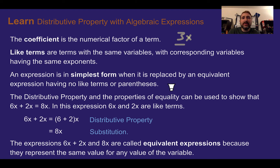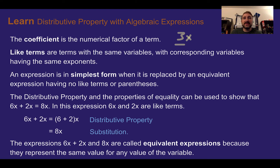An expression is in simplest form when it's replaced by an equivalent expression with no like terms or parentheses. If you see something with parentheses, it's not as simple as it should be — we need to fix it. If you see more than one of the same variable, meaning more than one like term, we also need to fix that.